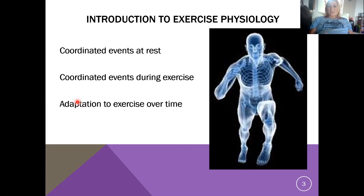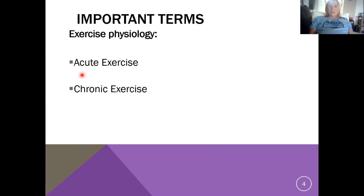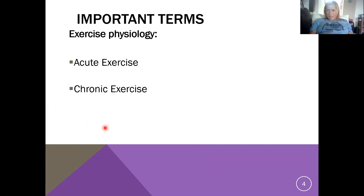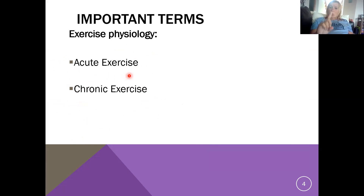When we think about exercise physiology, it's important for us to understand the difference between acute exercise and chronic exercise — these are essentially your two different branches of exercise physiology. Acute exercise has to do with the modifications or changes that are going to occur during one single exercise bout.